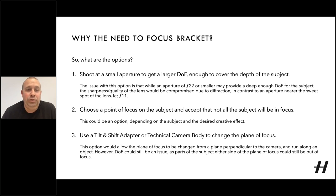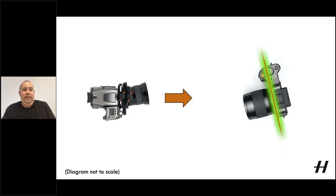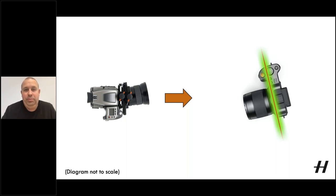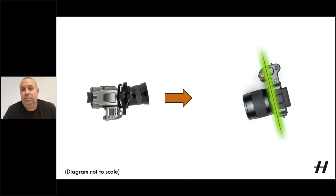Another option is to use a tilt shift adapter or technical camera body to change the plane of focus. This would allow the plane of focus to be changed from perpendicular to the camera to running along an object. However, depth of field could still be an issue. Looking at the diagram of the tilt shift adapter on the H camera, we're able to change the plane of focus so that we can get the whole Hasselblad logo on the top of the X1D in focus. But it's not possible to get all of the subject in focus this way — and note that it's not possible to focus bracket with the tilt shift adapter at the moment as it doesn't support autofocus.